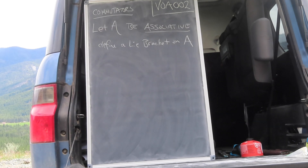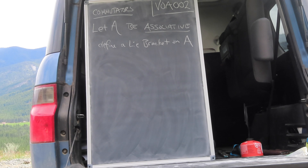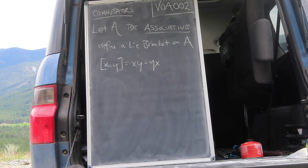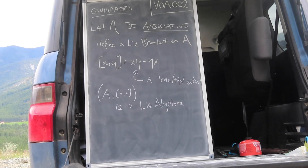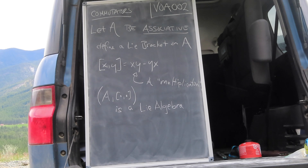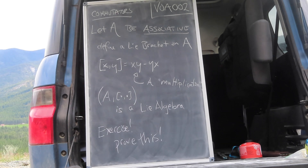We now turn to a slightly more concrete example of a Lie algebra, which also demonstrates a tight relationship between derivations and commutators. Let A be any old associative algebra. The commutator, or anti-symmetrized product, forms a Lie bracket on A. Thus, A with the commutator forms a Lie algebra, which you can readily verify as an exercise.